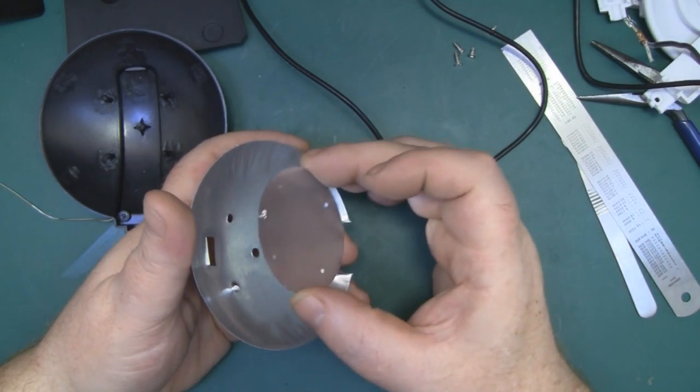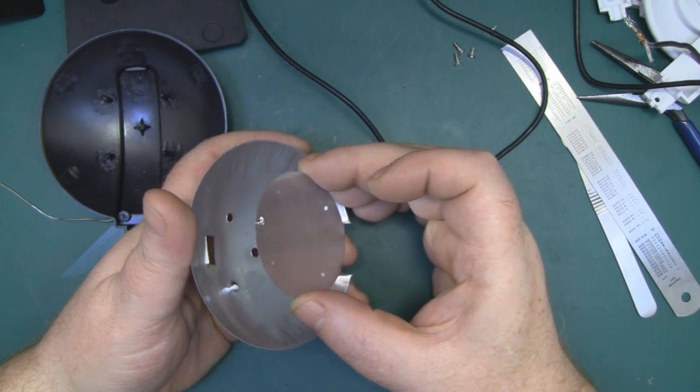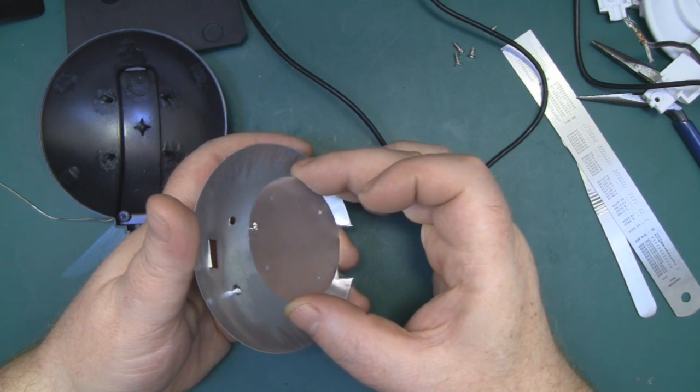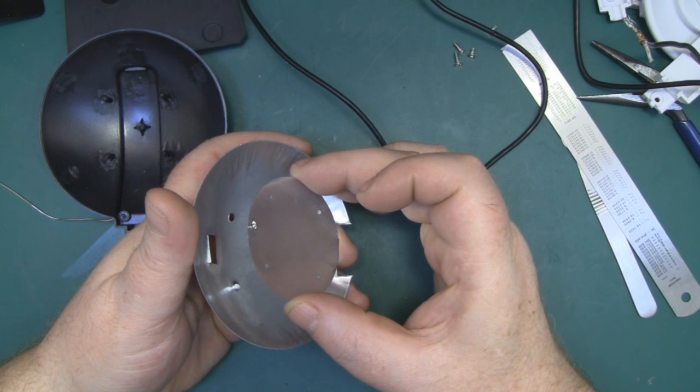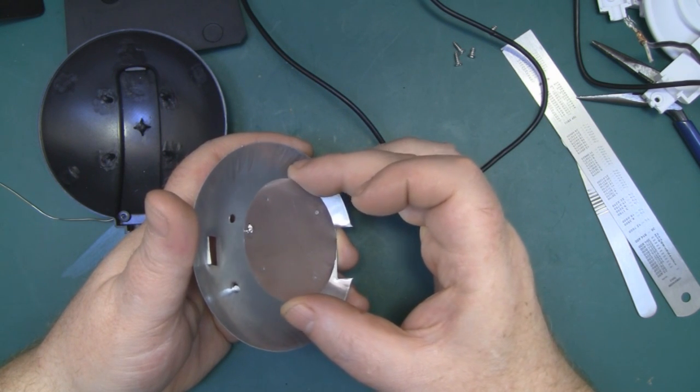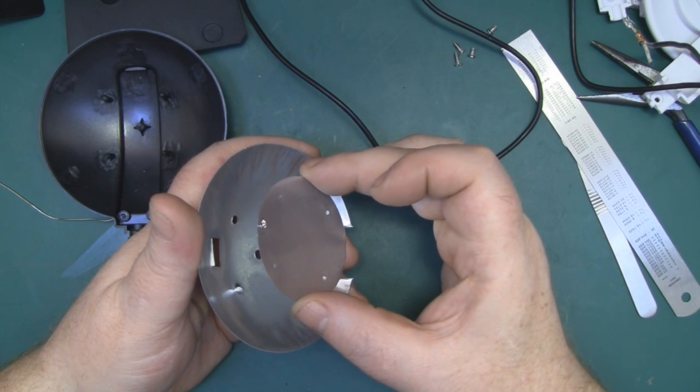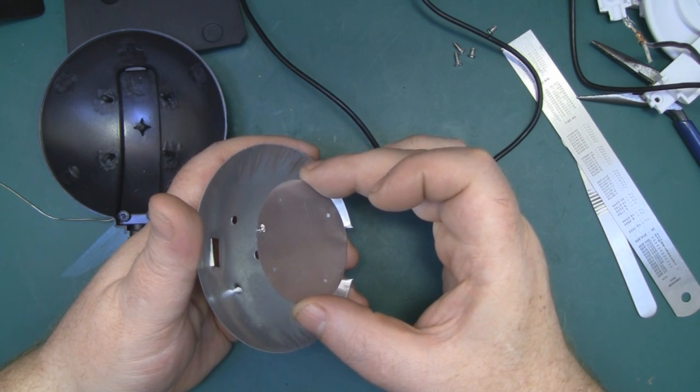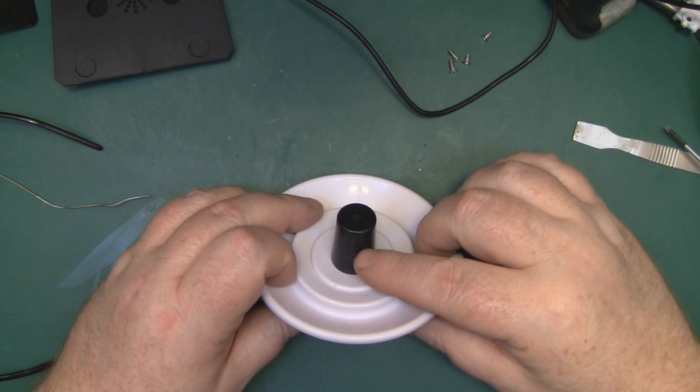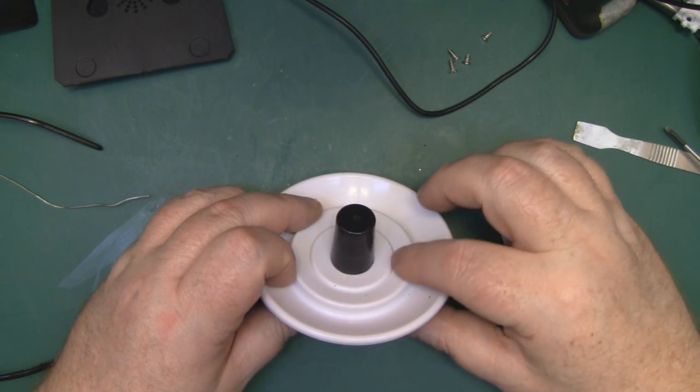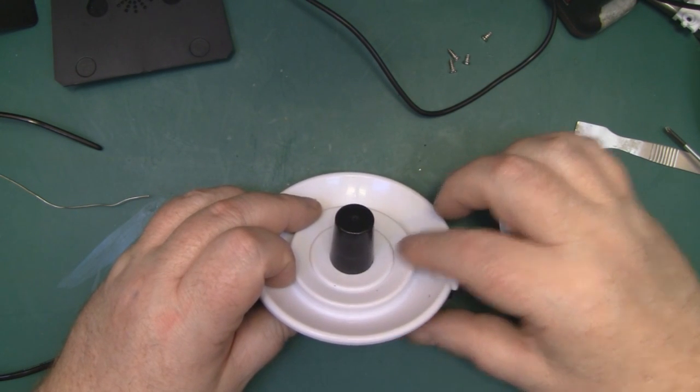This antenna would work a lot better if the main driven element was positioned about this distance away from the actual parabolic reflector rather than down inside there. It would just perform a lot better than what it actually does. So what I'm going to do is use this center piece of this plastic dish case and cut it down and mount the driven element directly onto that.